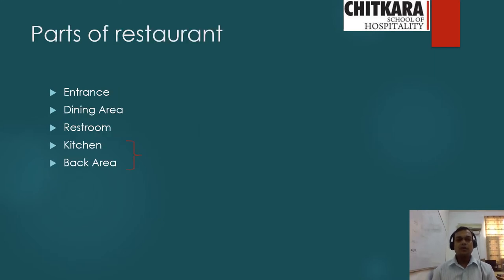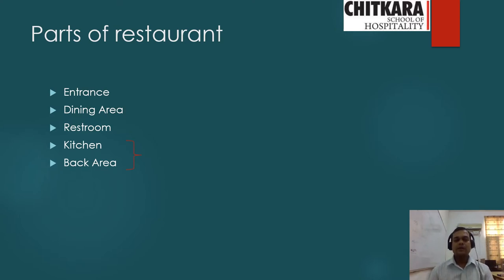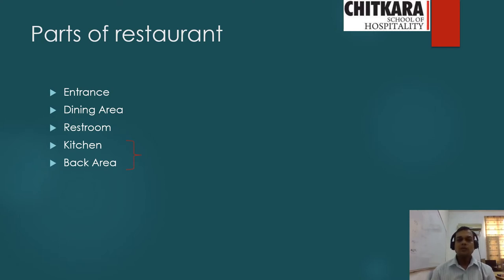The first thing to discuss is the parts of a restaurant. Just as a home has different parts, a restaurant has its own parts. Every restaurant has a distinctive unique entrance. There is a dining area where the layout and seating setup is done for guests to sit and dine. There are restrooms for both genders — male and female.